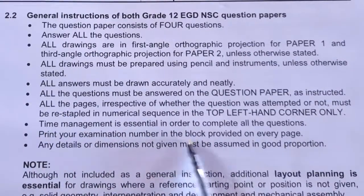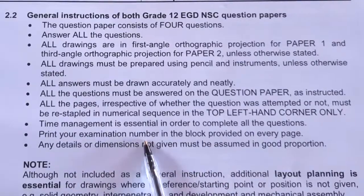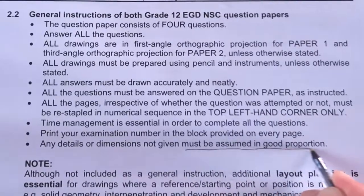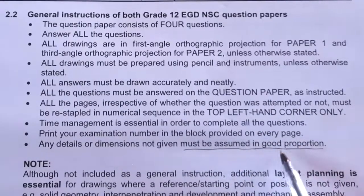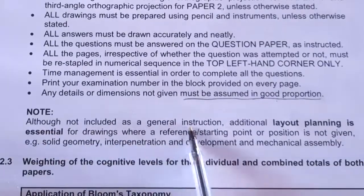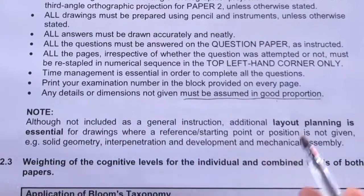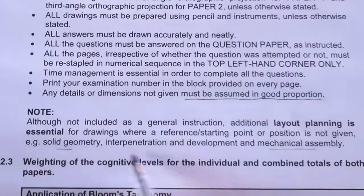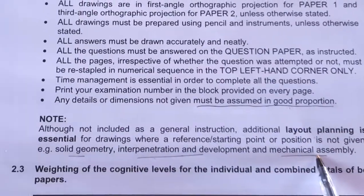Print your examination number in the block provided on every page — you cannot write your name or your school's name anywhere, only your examination number. Any details or dimensions not given must be assumed in good proportion, as there can sometimes be errors on the papers. Additionally, layout planning is essential for drawings where a reference starting point or position is not given. Most questions will have reference points such as Point P or Point S, except for solid geometry, interpenetration/developments, and mechanical assembly — for those three you will need to plan your own layout.